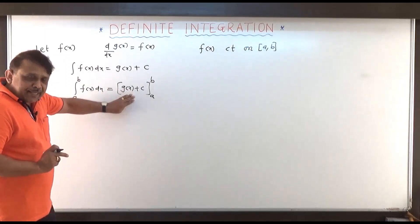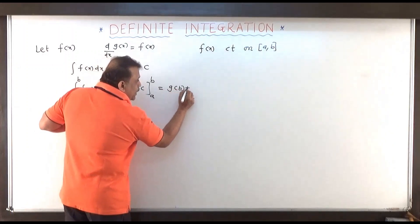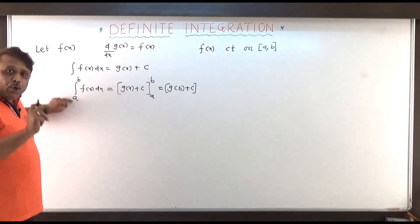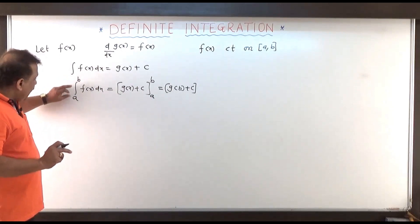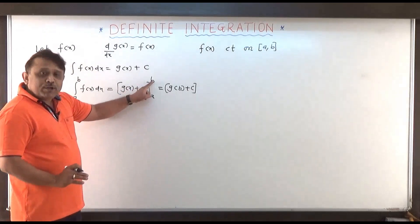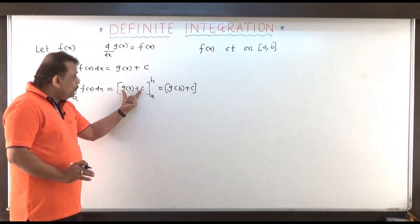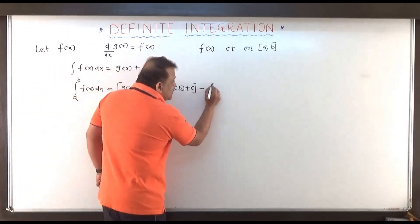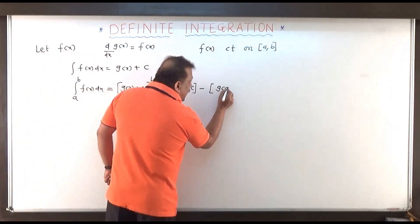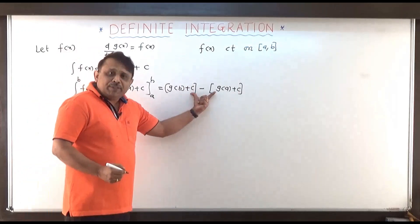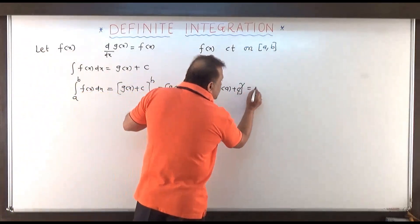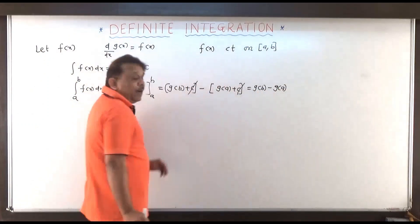Now let us define this as g of b plus c — I am replacing x by b here. b is called the upper limit and a is called the lower limit of this integration. So I am replacing x by b, that is g of b plus c, and then I subtract the value of the same function g of x plus c at a, which is g of a plus c. We see that the constant of integration gets eliminated by cancellation.